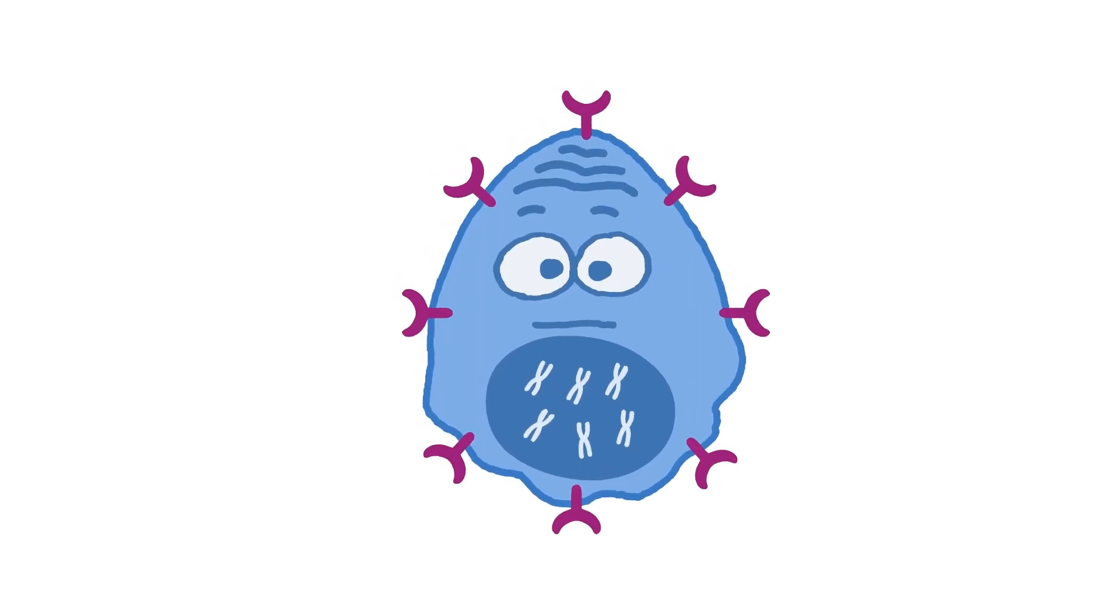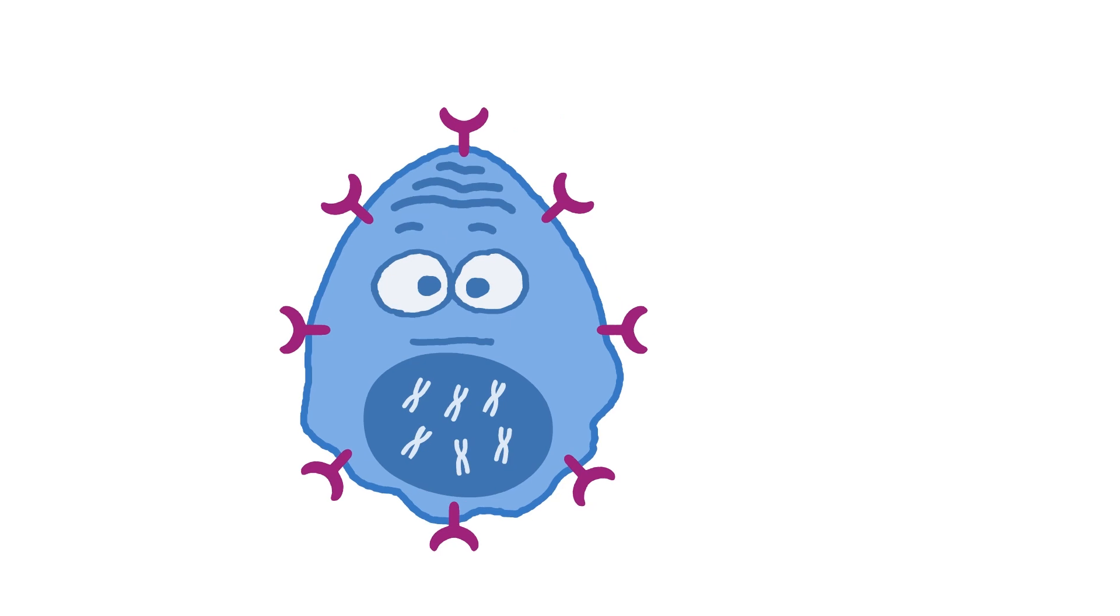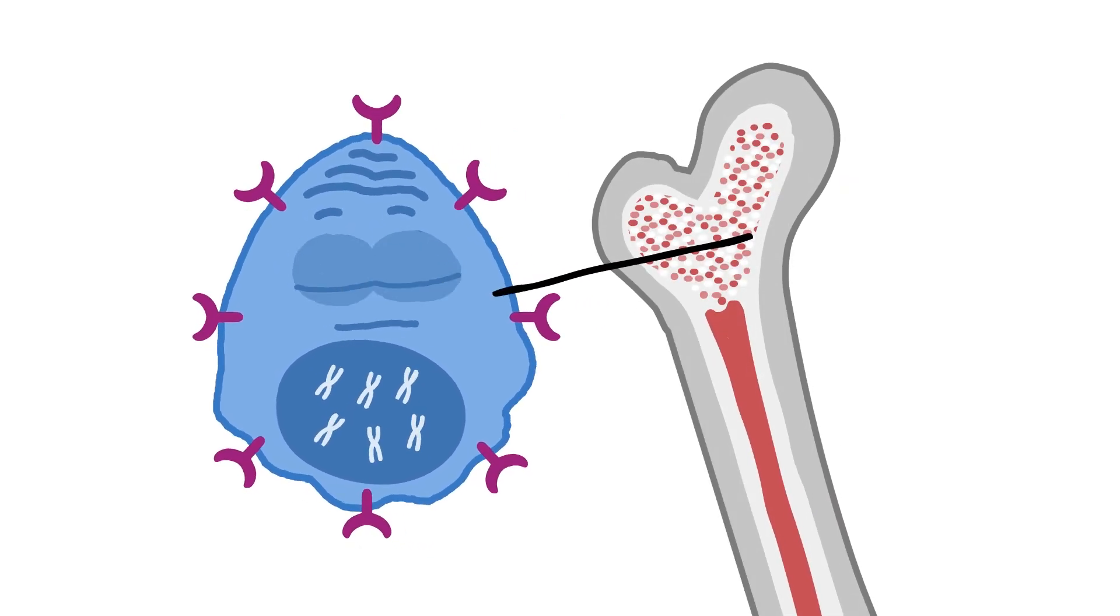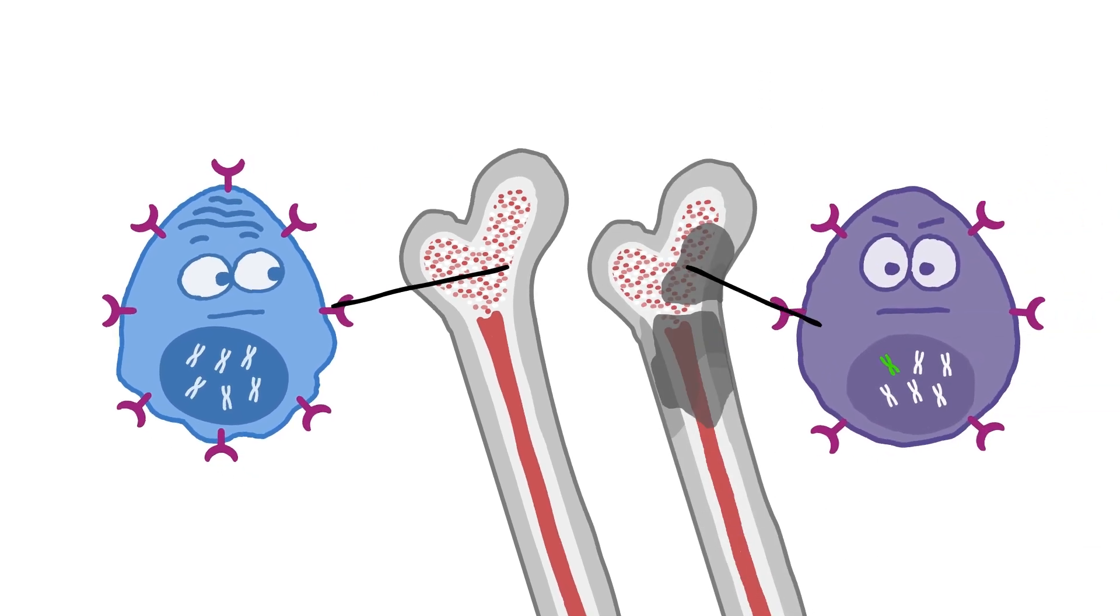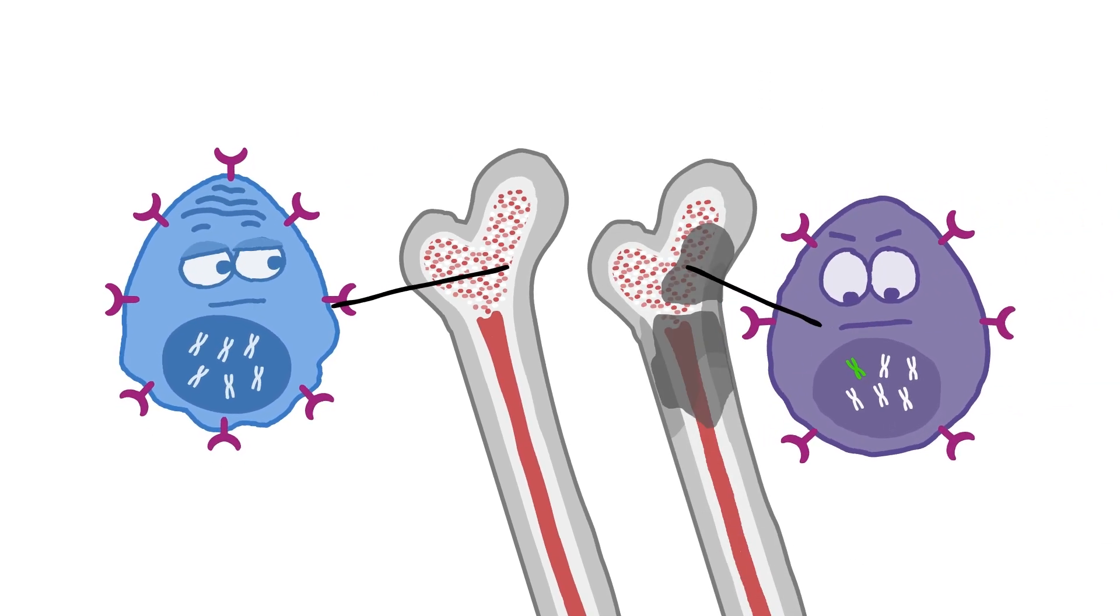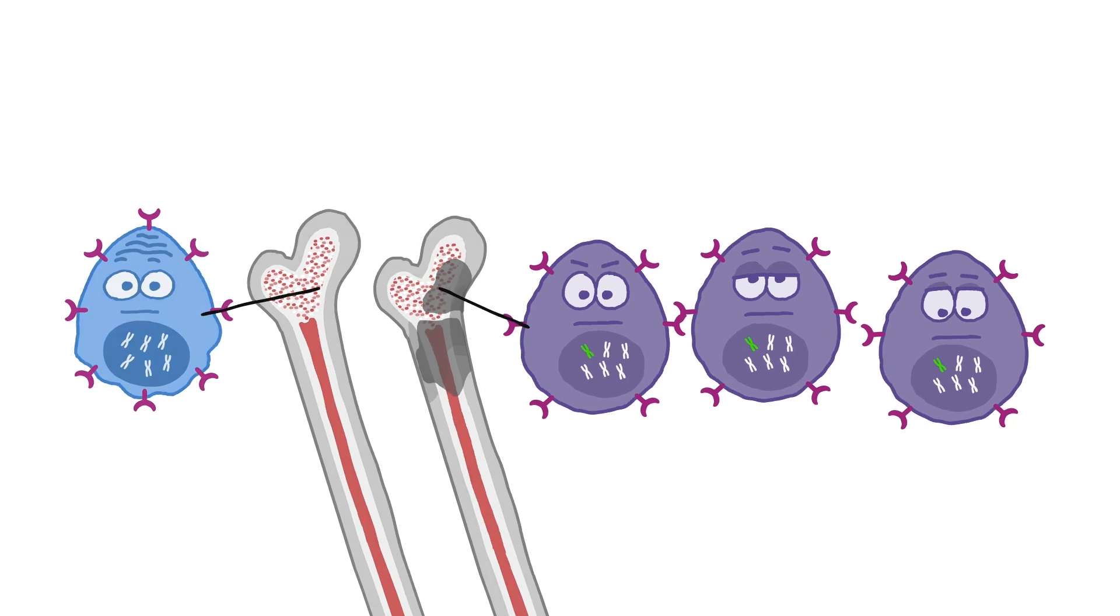Multiple myeloma is a cancer involving the plasma cells of the blood. Plasma cells are a type of white cell produced in and found in bone marrow. In multiple myeloma, these cells are altered and grow uncontrollably in the marrow.